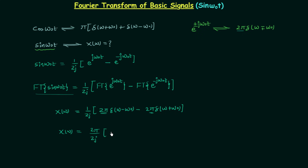So we have X(ω) equal to (2π)/(2j) inside the bracket: δ(ω − ω₀) minus δ(ω + ω₀).